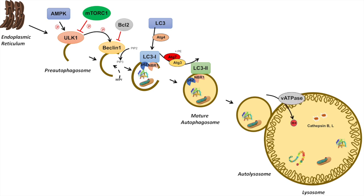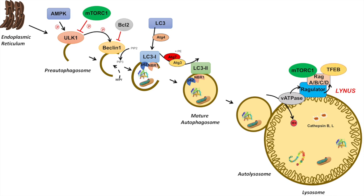At the lysosomal interface, V-ATPase (vacuolar ATPase) acts as the hydrogen ion pump for the lysosome and is a site of regulation. When amino acids are present within the lysosome, V-ATPase can relay this information to RAGULATOR and then onto RAG proteins — this machinery is called the LYNUS (lysosome nutrient sensing) machinery. Once RAGULATOR relays that many amino acids are present, mTORC1 can bind to the RAGULATOR proteins, as can TFEB (transcription factor EB), the master regulator of lysosomal biogenesis. When both are bound, mTOR can phosphorylate and inhibit TFEB.